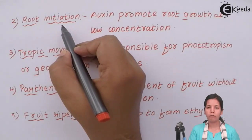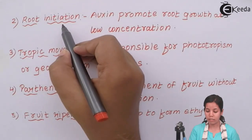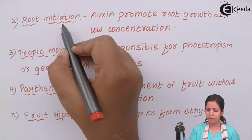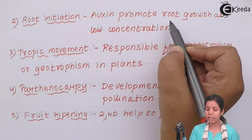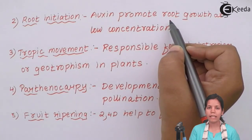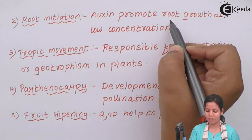The second function of auxins is root initiation. If auxins are present at low concentration, they help in the formation of roots.